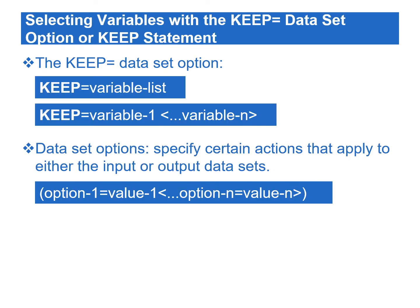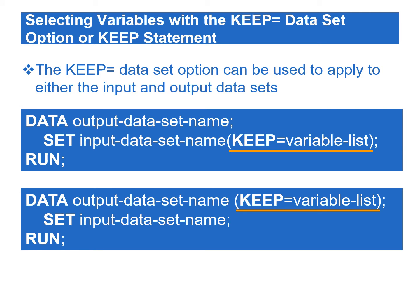To create a data set by selecting several variables, we can use either the KEEP= data set option or the KEEP statement. Using data set options allows us to specify certain actions that apply to either the input or output data sets. To use the data set options, we need to place them in parentheses after the data set name. Specifying the KEEP= data set option after the data set name in the SET statement reads only the specified variables from the input data set. Placing the KEEP= data set option in the DATA statement controls which variables are written to the output data set.